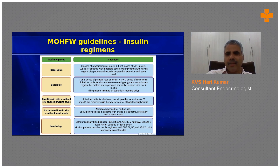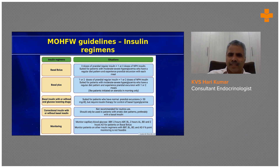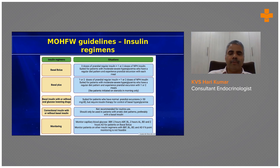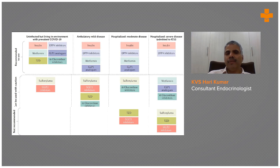Regarding regimens, as discussed and outlined in the MOH guidelines, the basal-bolus regime uses three times bolus coverage with one basal component. Basal-plus uses a single bolus shot with the major meal of the day while basal insulin covers the rest. Correctional insulin can be added when pre-meal values remain high despite the basal component, and adjusted for next-day calculations.